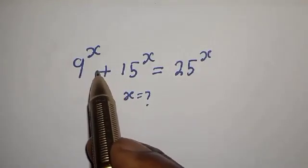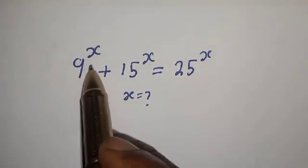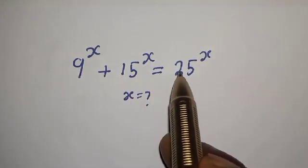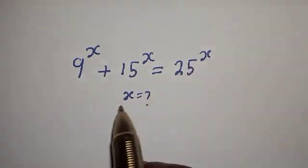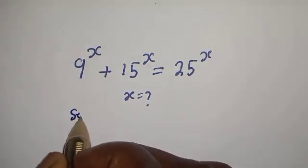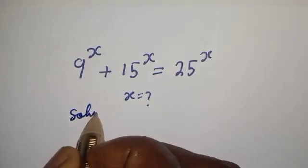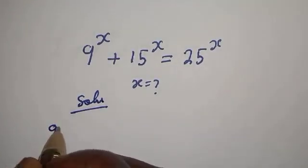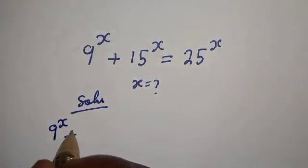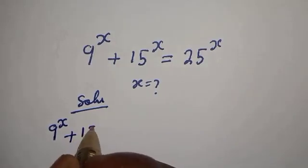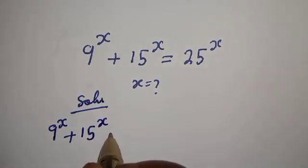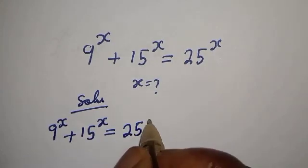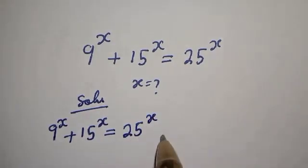How to solve for s from this equation: 9 raised to power s plus 15 raised to power s is equal to 25 raised to power s. Solution: 9 raised to power s plus 15 raised to power s is equal to 25 raised to power s.